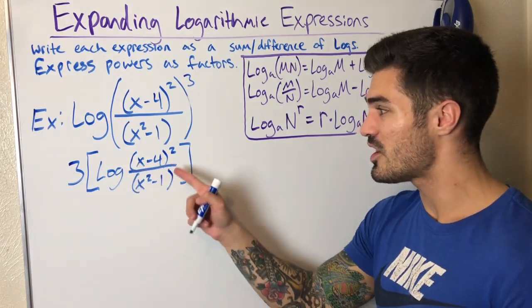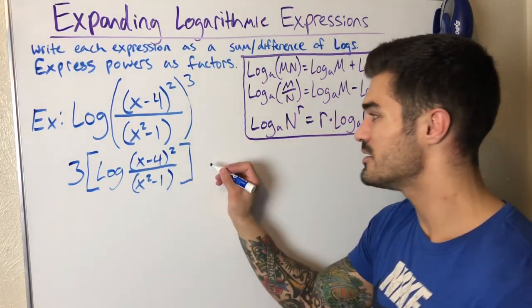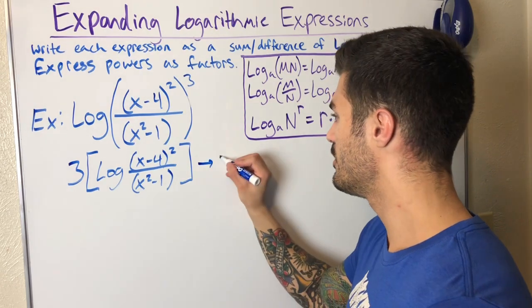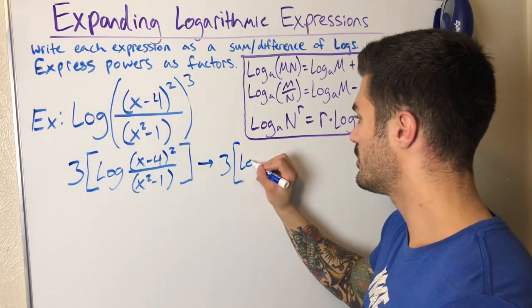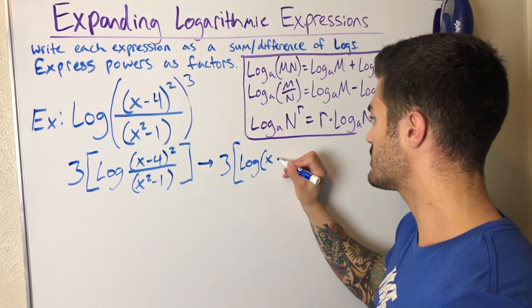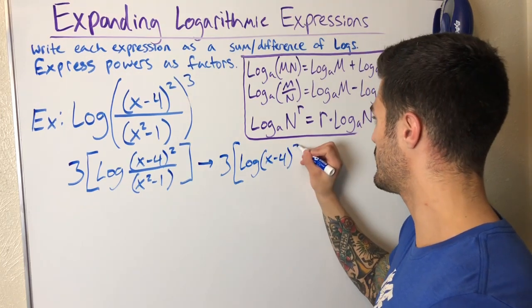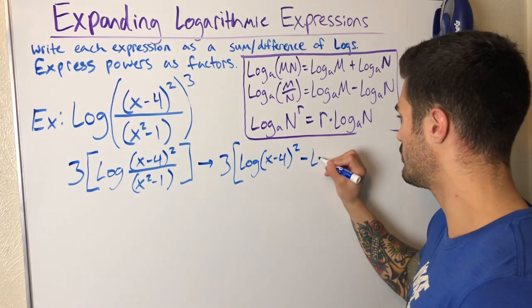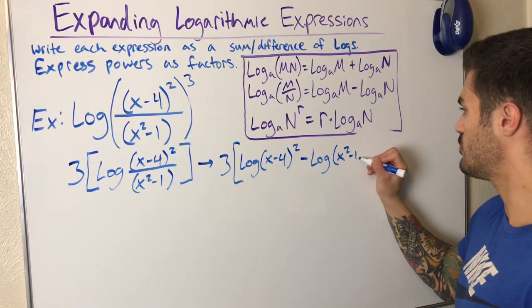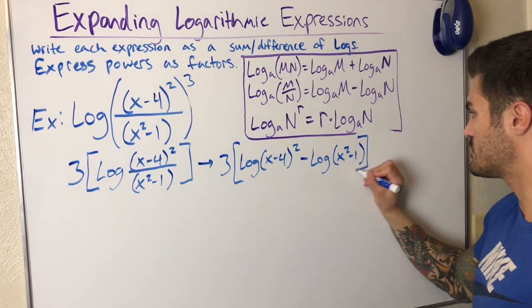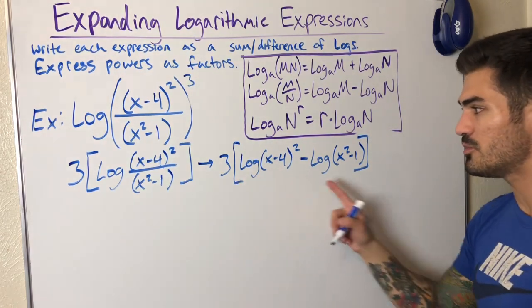So now I have division here. I can split this up. The top minus the bottom. So three times, and I'm keeping my brackets still, log x minus four squared minus log x squared minus one, close brackets. Again, this three has been multiplied to everything.